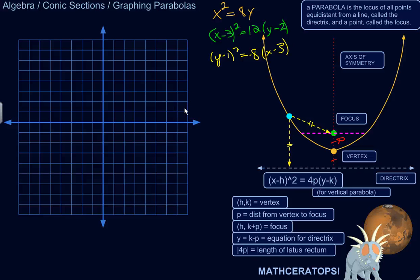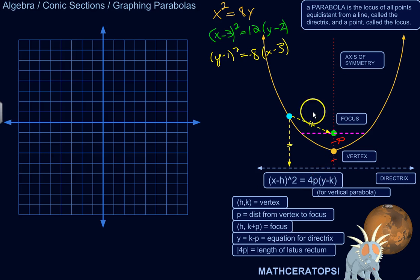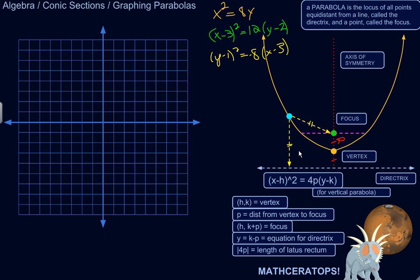Let's try to graph a couple of simple parabolas. Here's the standard form of the equation: x minus h squared equals 4p times y minus k. That's for a normal vertical parabola. If it's horizontal, you would switch the x minus h and y minus k, so the squared part would be with y minus k, and the non-squared part with x minus h. H and k are the coordinates of the vertex, and p is the distance from the vertex to the focus.